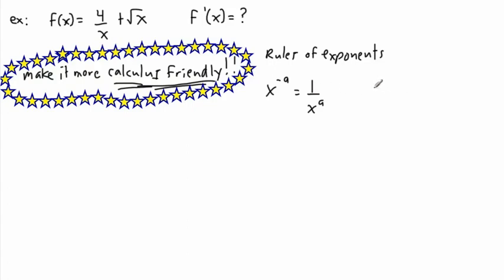Another rule is fractional exponents. If you have the nth root of x — which could be the cube root if there's a little 3, or the square root if there's a little 2 — this is the same as saying x to the power of 1 over n. So the square root of x, where the 2 is implied, would be x to the power of 1 over 2. A cube root would be x to the power of 1 over 3.